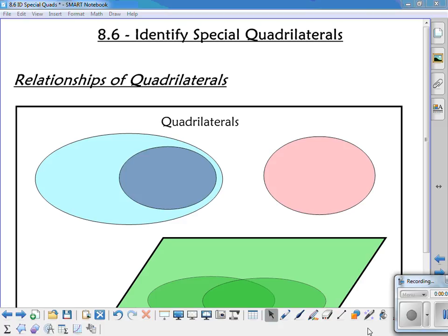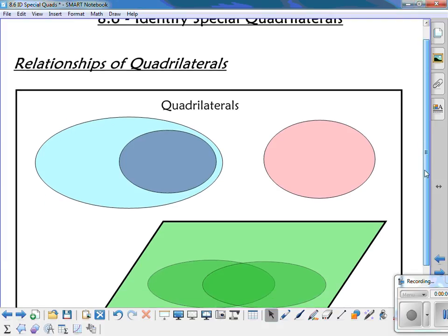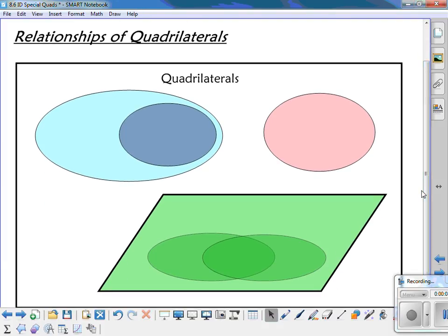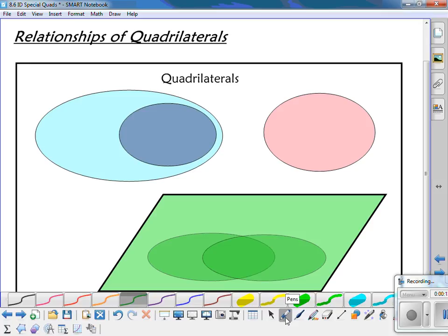Okay, so this video we'll talk about identifying special quadrilaterals. So first, let's look at the relationship amongst our quadrilaterals. The box as a whole represents all quadrilaterals. And then within that, we have some special quadrilaterals.